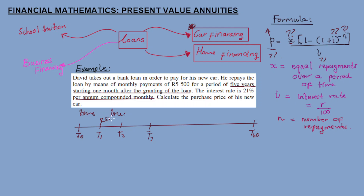The payments of five thousand five hundred rand start one month after the granting of the loan, so the first payment is at T1 and the last payment is at T60. This is compounded monthly. After he gets the loan, the following month he starts paying. The payments start one month after the granting of the loan — so there's no payment at T0.